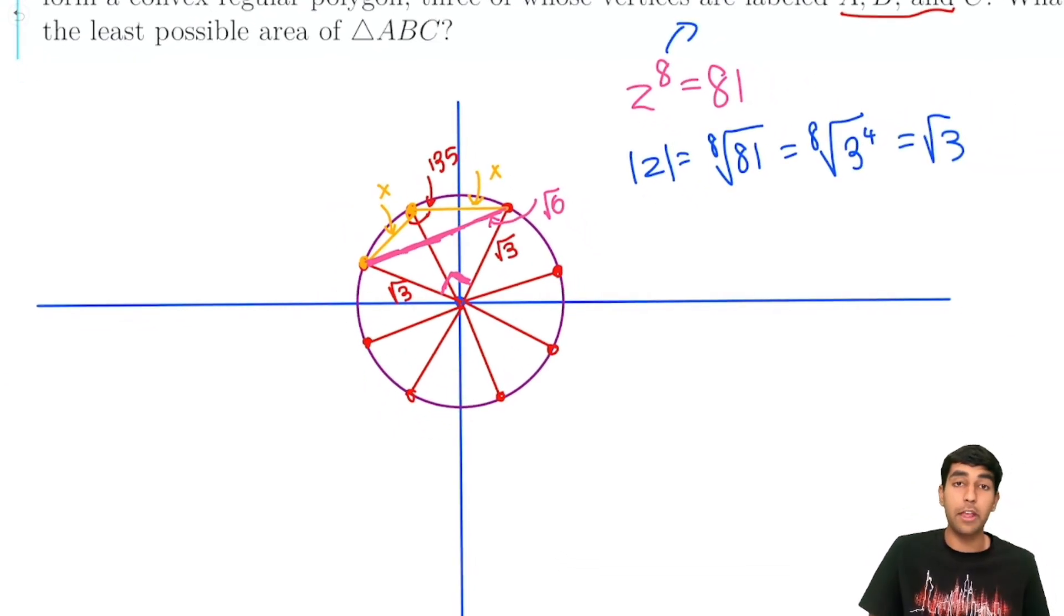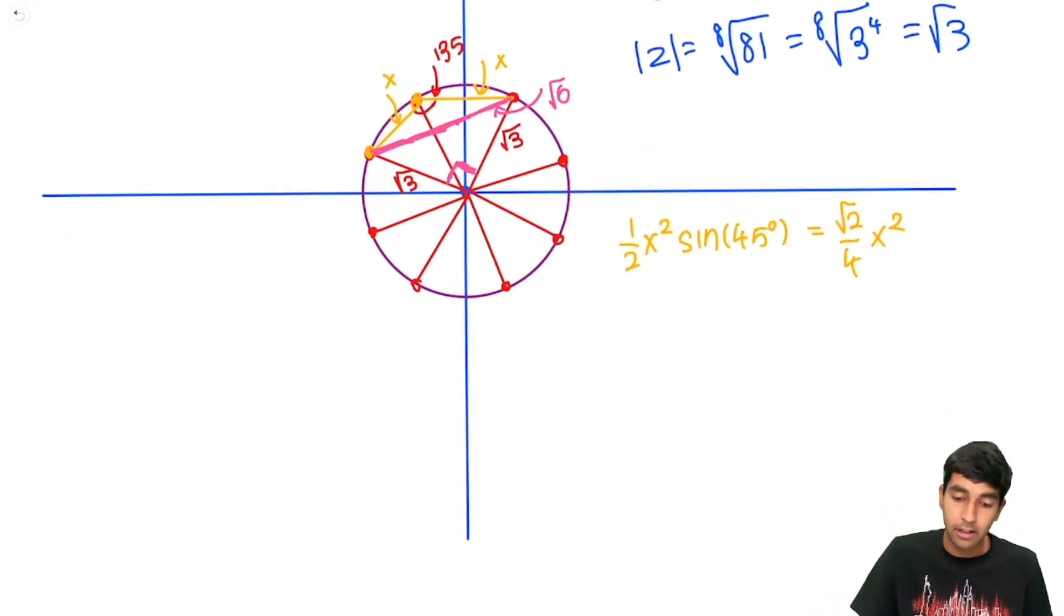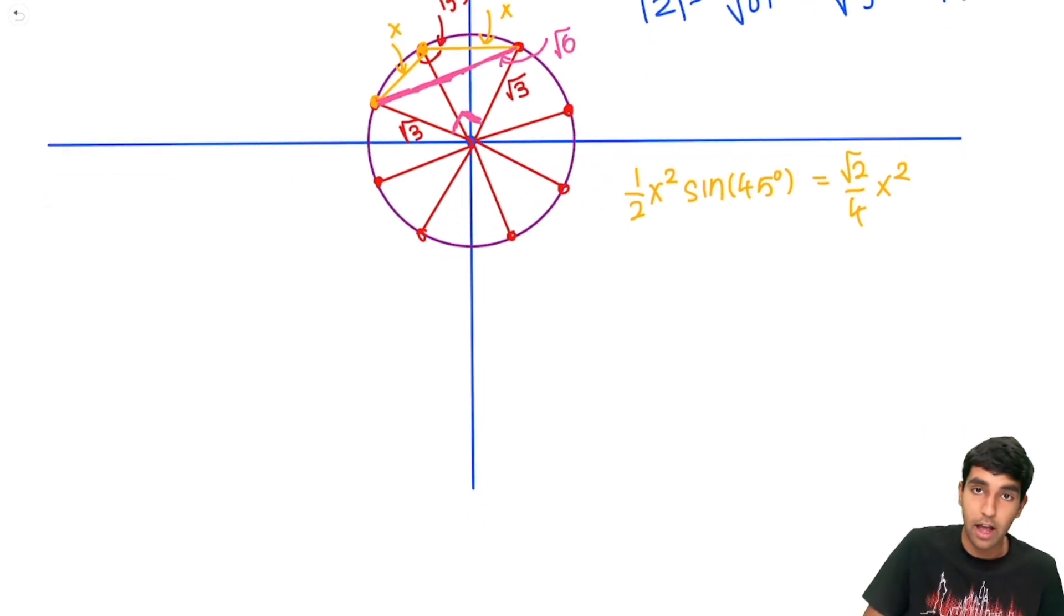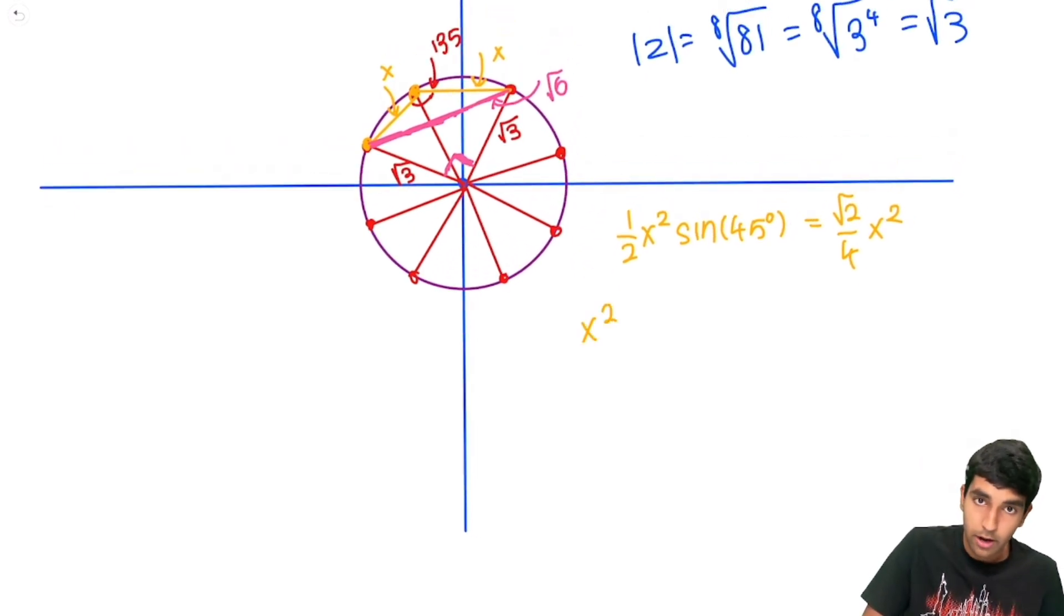So all we have to do is solve for x eventually. And this is just going to be root 2 by 4 x squared. So let's just solve for x and we'll be done. And we can solve for x using the law of cosine. So we have x squared plus x squared minus 2ab, cosine 135. Cosine 135, that's just negative root 2 over 2. That's equal to square root of 6 squared, 6. And from here, we just cancel off these negatives. We get 2x squared times 2 plus square root of 2 equals 6. So x squared equals 6 over 2 plus root 2.